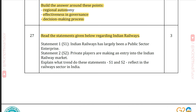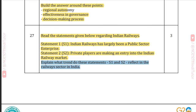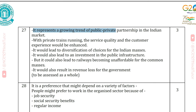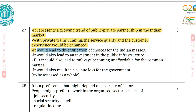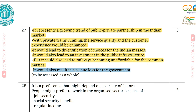Question 27: Two statements about Indian railways — S1: Indian railways has largely been a public sector enterprise; S2: Private players are making an entry into the Indian railway market. What trend do these statements reflect? Answer: They represent a growing trend of public-private partnership. With private trains running, service quality and customer experience would be enhanced, leading to diversification of choices. It would also lead to investment in public infrastructure, but railways could become unaffordable for common masses and result in revenue loss for the government.